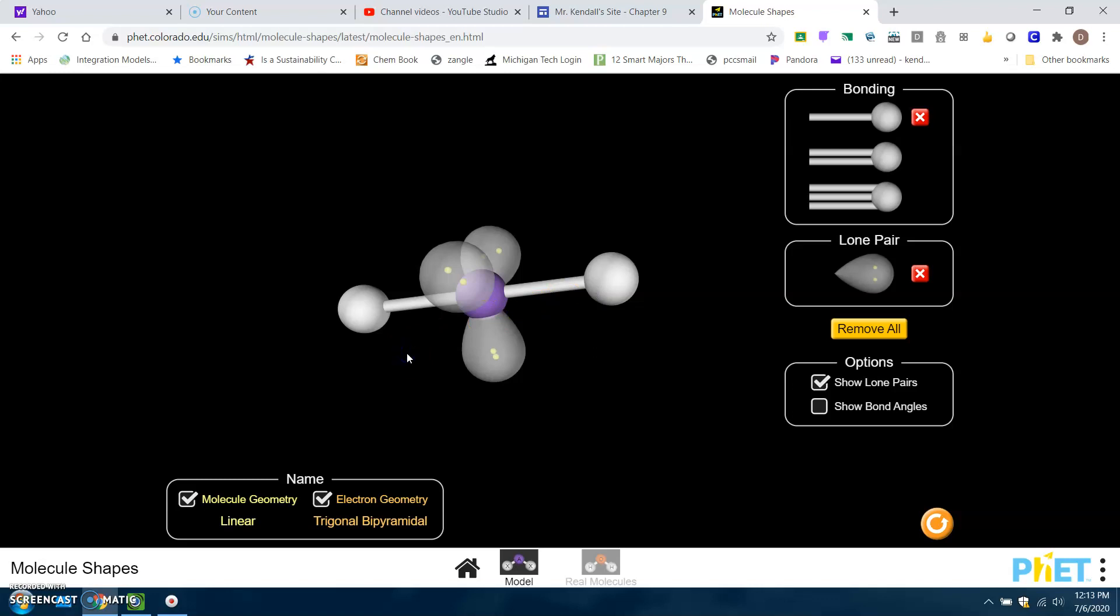Okay, so that is all of five. And this is a decent place probably to take a break. And then we'll come back around and do the last one in this grouping, which is six electron domains. We'll be right back.